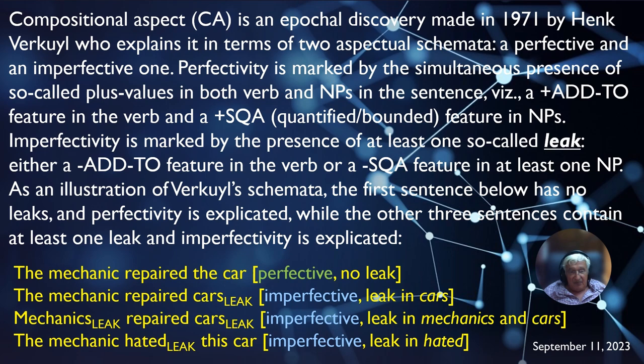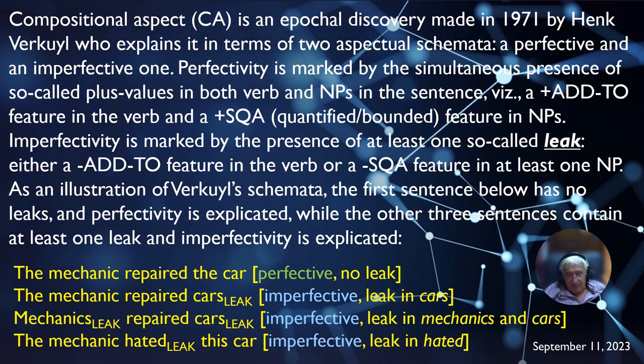We can have a leak in both subject and object: 'mechanics repaired cars' — imperfective because it has two leaks, one in the subject and one in the object. We can also have a leak in the verb: 'the mechanic hated the car' — the leak is in the verb, which is a state verb, and therefore the sentence is imperfective.